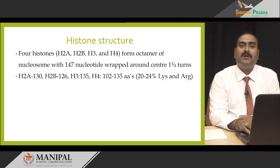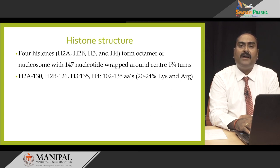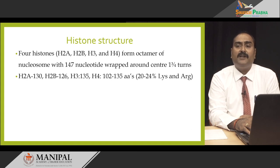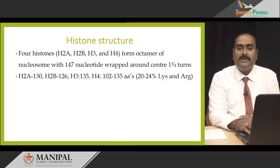These histones are made up of amino acids. The individual amino acid numbers are: H2A is made up of approximately 130 amino acids, H2B approximately 126 amino acids, H3 is 135, and H4 is variable, having 102 to 135 amino acids. The key feature is that approximately 20 to 25 percent of the total amino acids present in these histones are lysine and arginine — that is, they are basic amino acids with an extra positive charge.